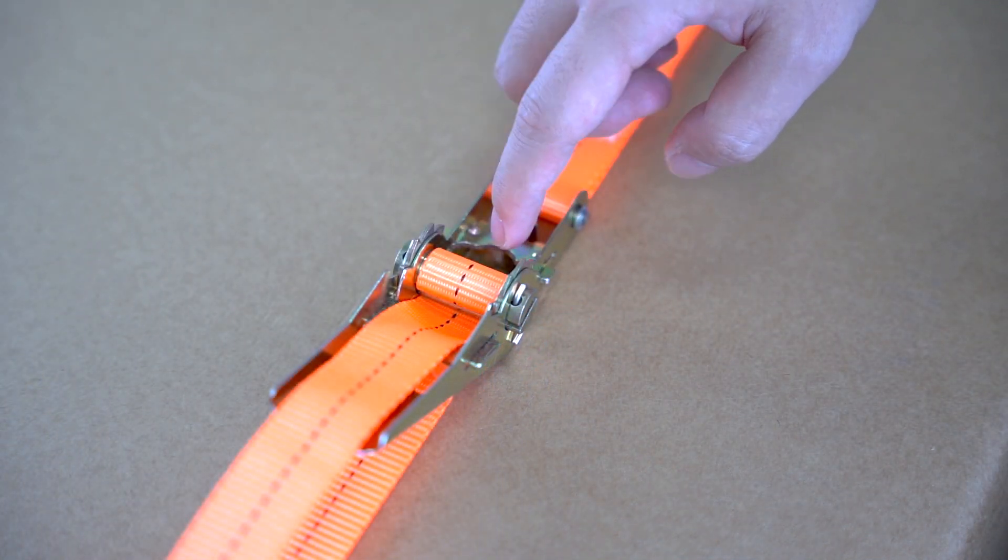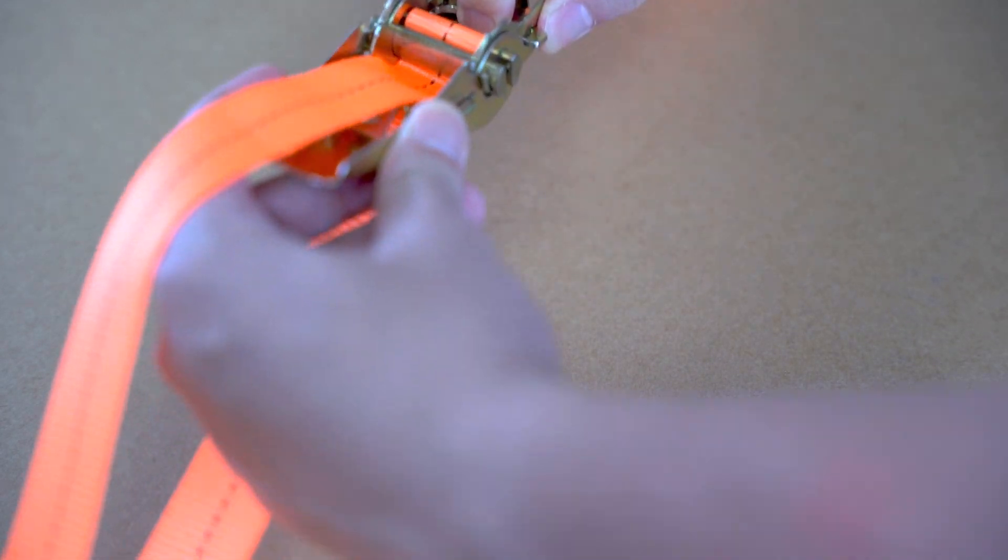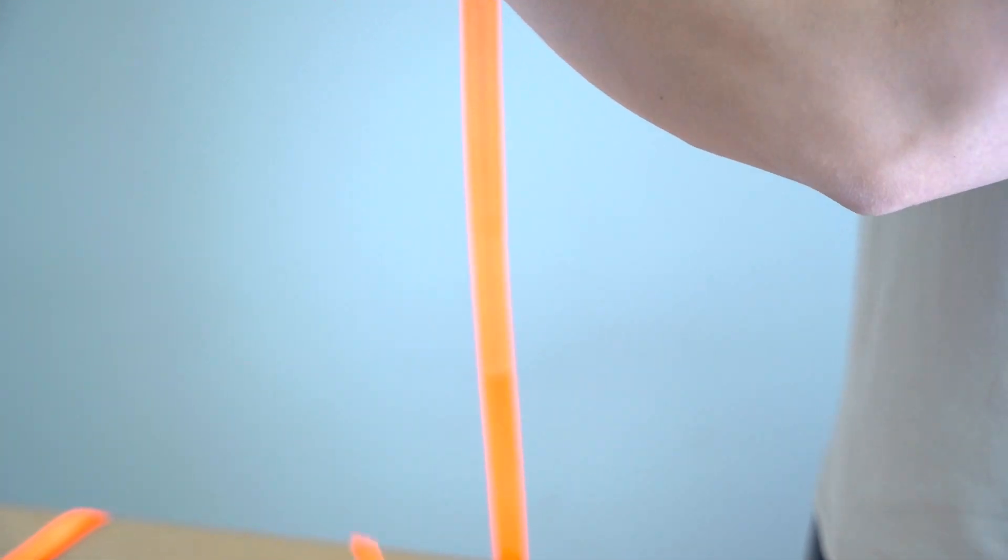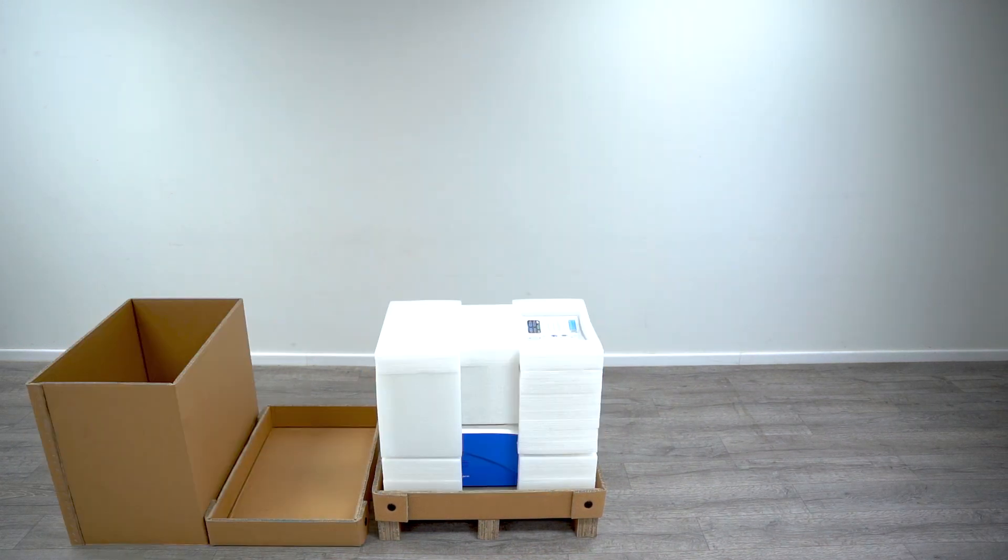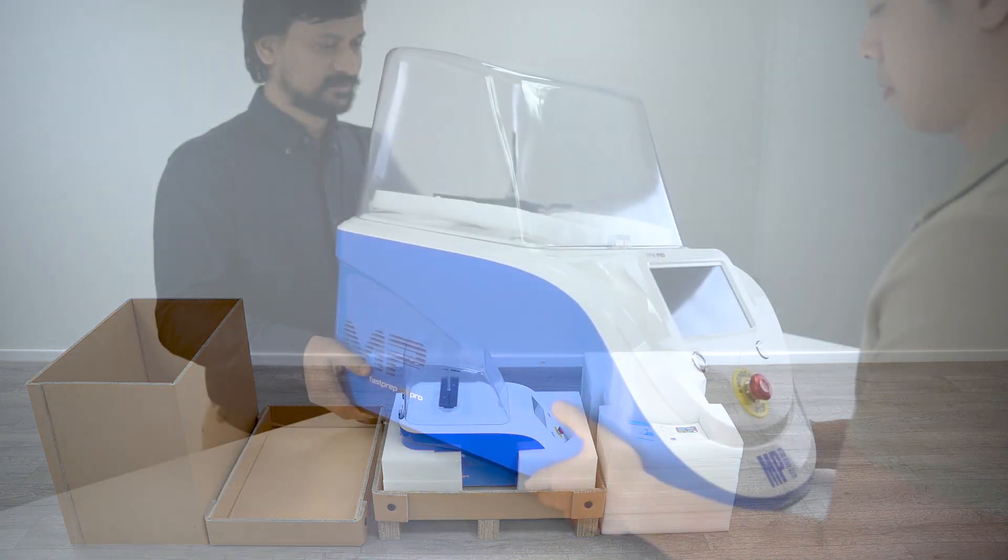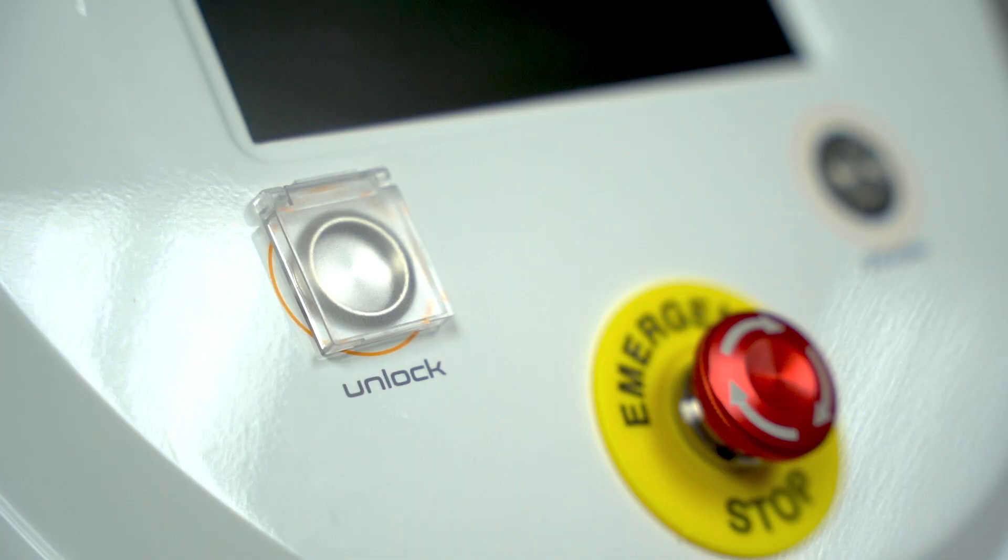Then slide the loose end of the strap out of the ratchet assembly and remove the strap from the box. Carefully open the box, remove the top cover, side sleeves, and foam packaging. With two people, lift the machine from opposite sides and place it on a stable, clean table.